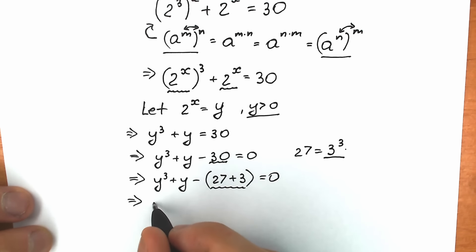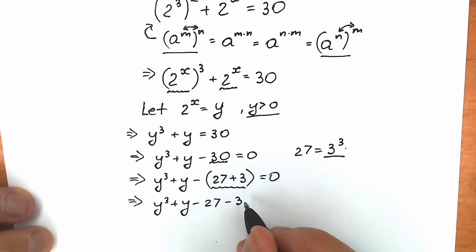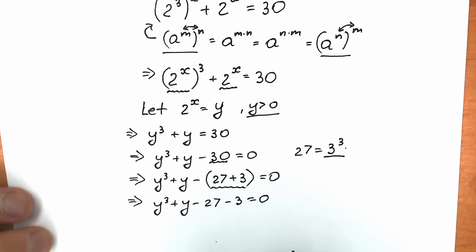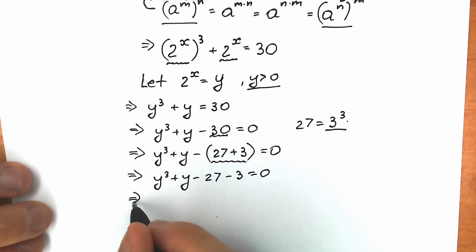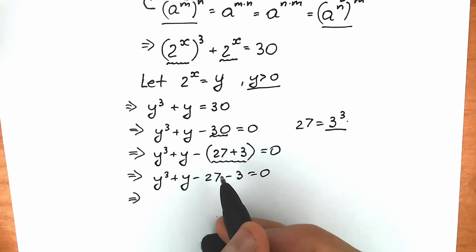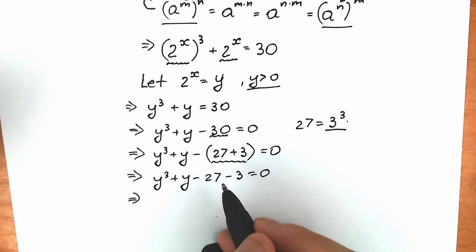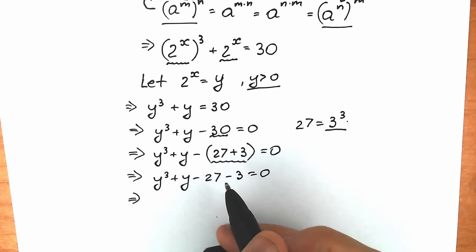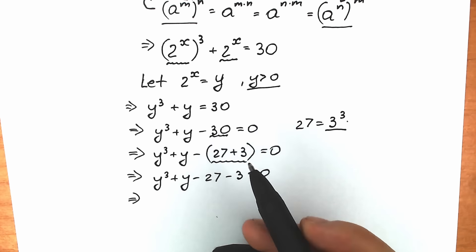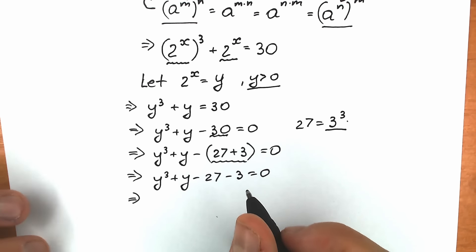Instead of 27, we plug in 3 cubed. I want to say right now that this is not a general method — it happens here that we can express it as a cube, and I apply this method. This is not a basic general method for cubic equations. If you had something like 31 instead of 30, you could not solve it this way — you would need other approaches. This is very interesting, important information.